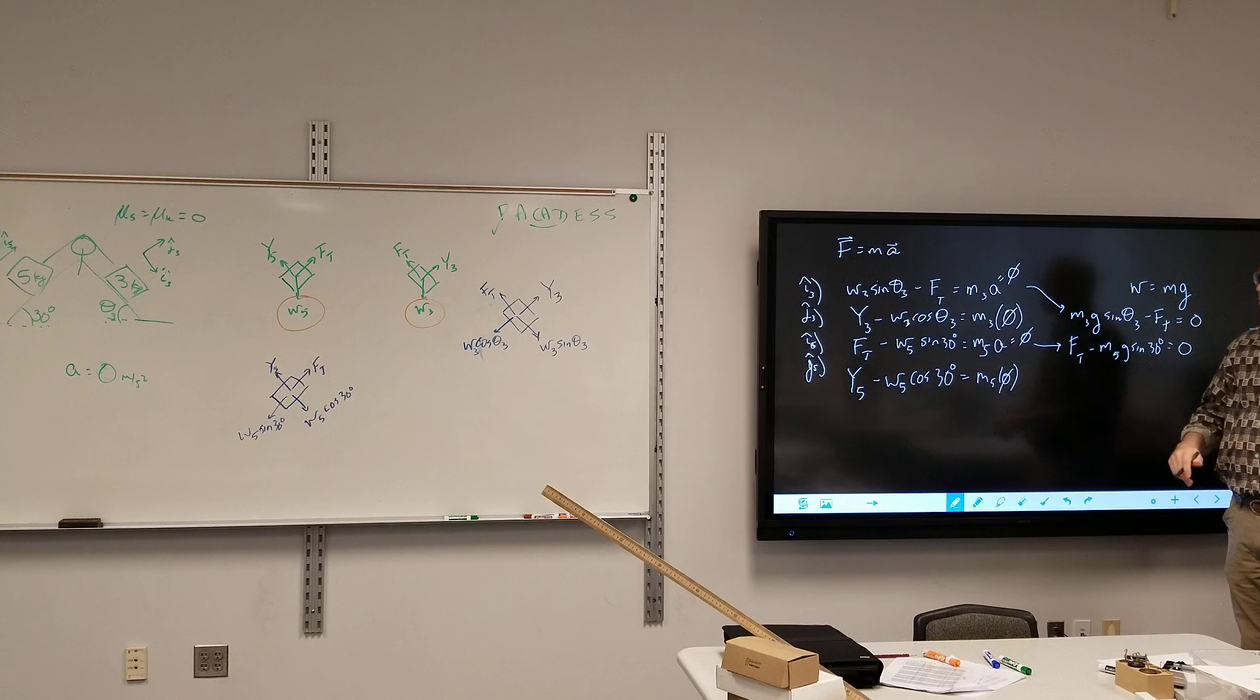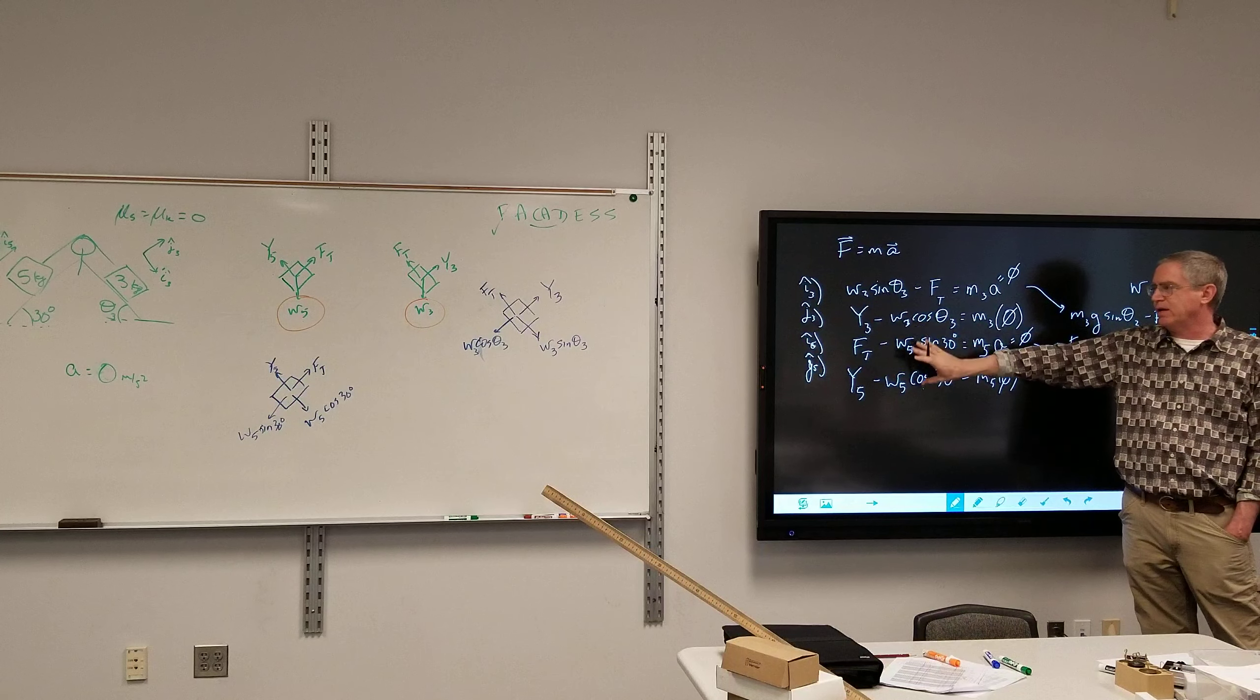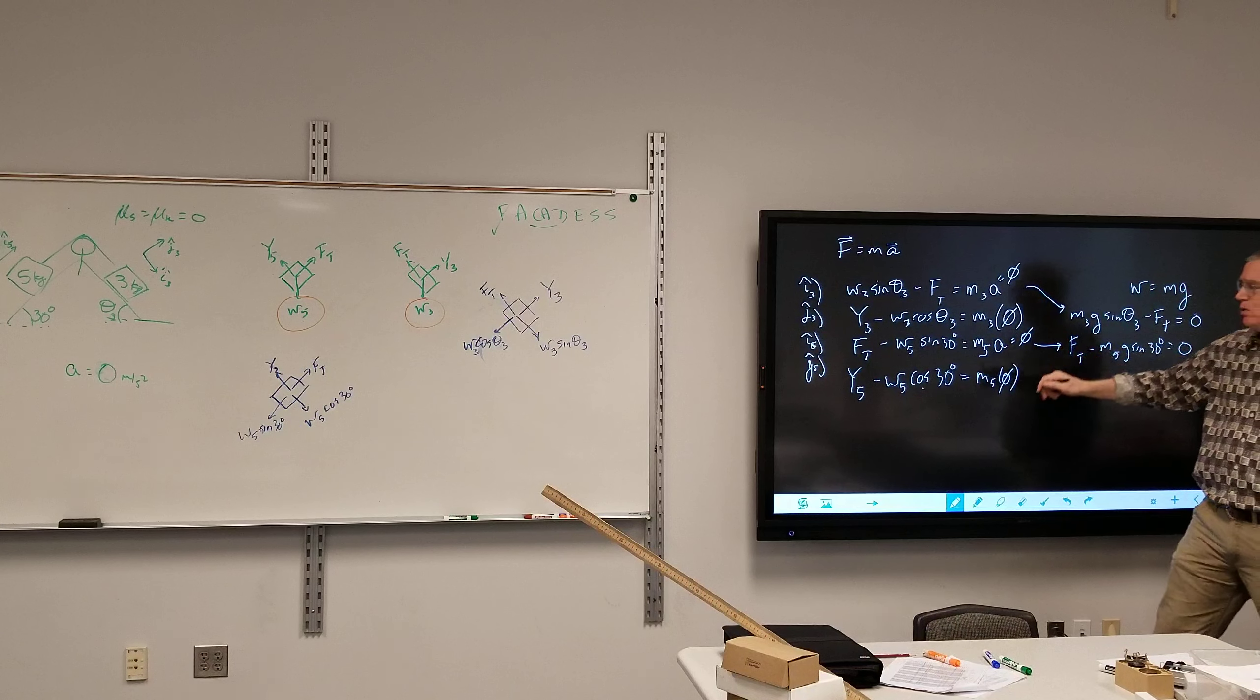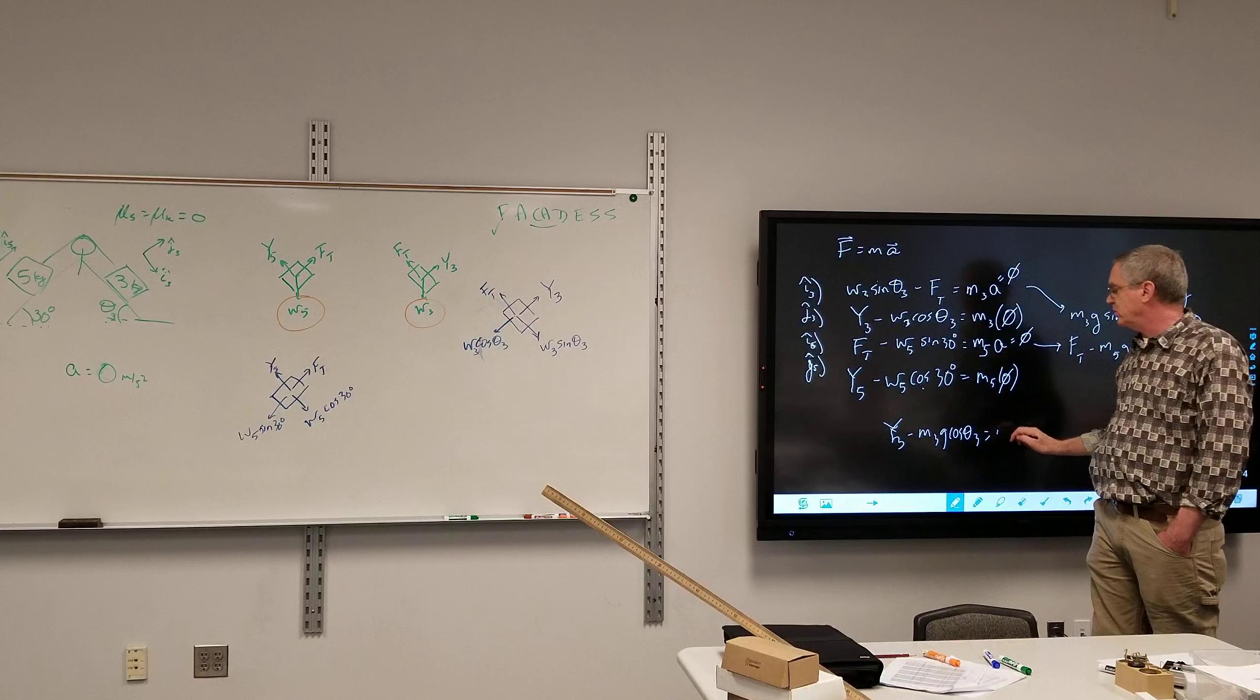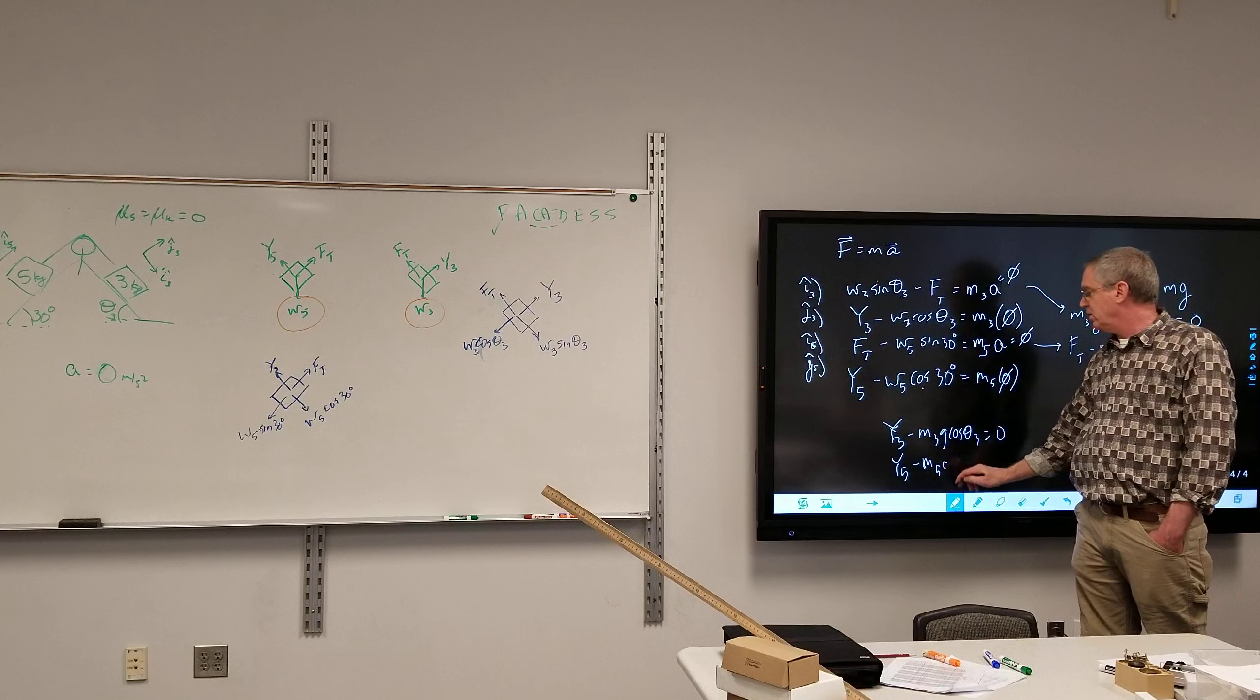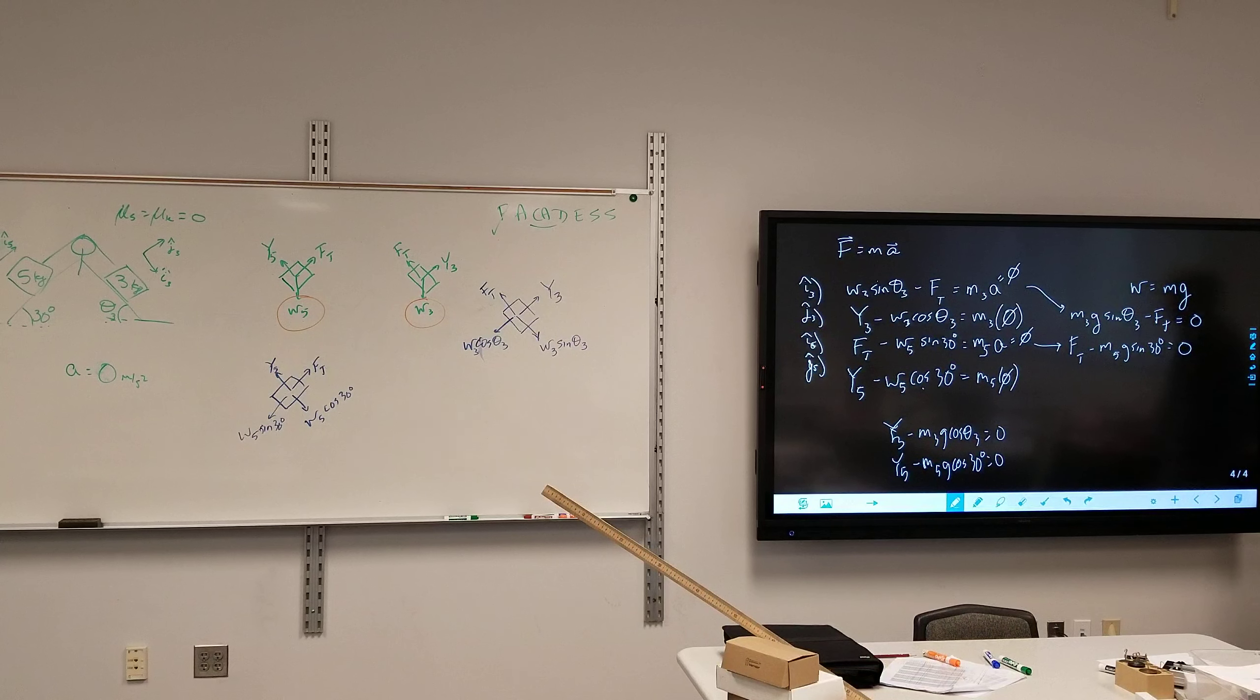And then tension minus M5g sine of 30 degrees is equal to zero. All I did was take those two. I know that without friction and without any movement in the direction of the normal force, these two equations are not going to have any play in this one. And that's fine. I just know that in this particular problem, it's not going to help us.